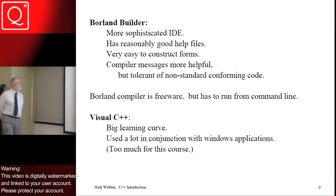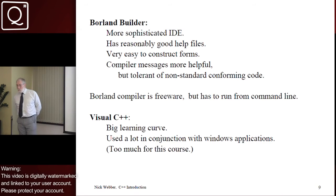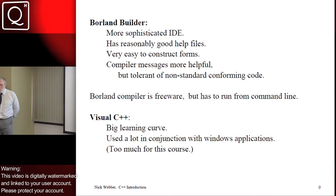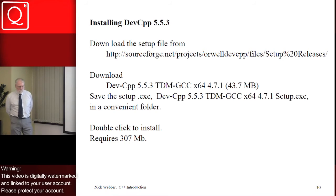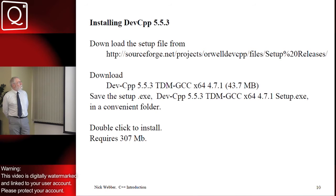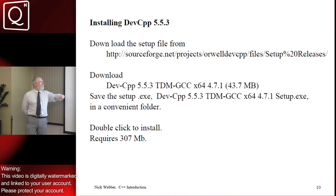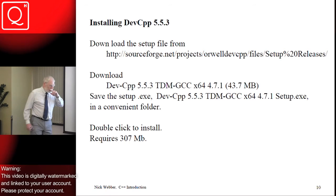Other things: Borland Builder is more sophisticated. At one stage it was a bit standard non-compliant, but perhaps that's changed recently. Visual C++ is widely used and my code should run with Visual C++, but I support only running the code with Dev C++. To get hold of Dev C++, it's available at the time of speaking — which is 2014 — from the website SourceForge.net. There's a file of 43MB to download which, when you run it, will install Dev C++. It occupies a bit over 300MB.